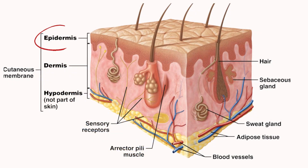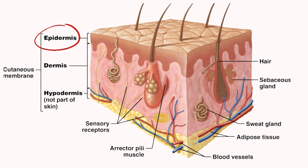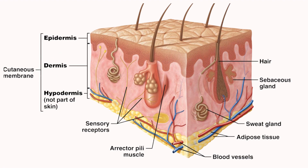1. Epidermis: the outermost layer, primarily composed of epithelial tissue. 2. Dermis: the middle layer, composed of connective tissue, blood vessels, nerves, and other structures. 3. Hypodermis (subcutaneous tissue): the innermost layer, composed mainly of adipose (fat) tissue.